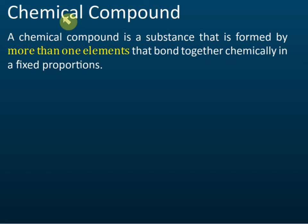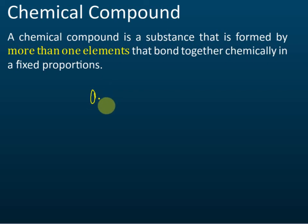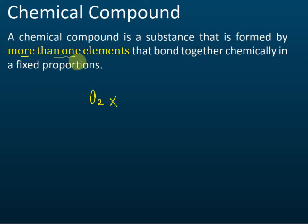A chemical compound is a substance that is formed by more than one element that bonds together chemically in fixed proportions. For example, O₂ — is this a chemical compound? The answer is no, because you must have more than one element, and oxygen here is just one element.